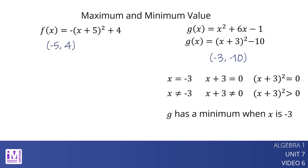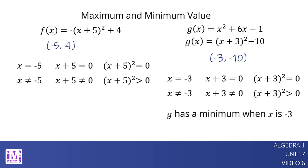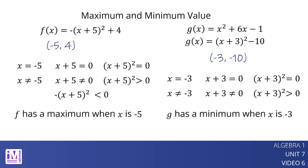Let's look at function f to see if the vertex (-5, 4) is a maximum or a minimum. We know that when x is negative 5, x plus 5 equals 0, so the quantity x plus 5 squared is 0. When x is not negative 5, the quantity x plus 5 squared is positive. The expression negative the quantity x plus 5 squared has a coefficient of negative 1. Multiplying a positive number by a negative number results in a negative, so negative the quantity x plus 5 squared will be negative when x is not negative 5. Since a negative number will always be less than 0, the value of f when x is not negative 5 will always be less than when x is negative 5. This means f has a maximum when x is negative 5.